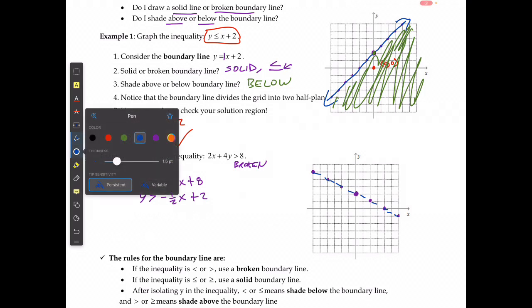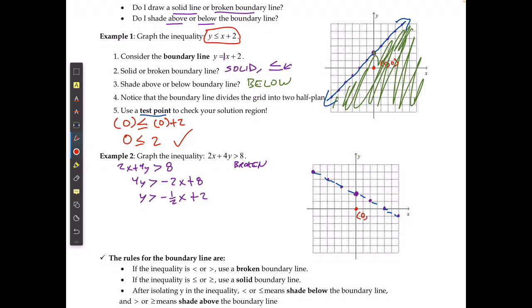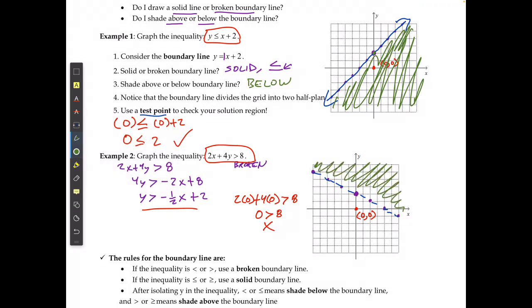I check the test point (0, 0) using the original inequality — not the modified one — because if I made a mistake like forgetting to flip a sign, the original protects me. Substituting: 2(0) + 4(0) > 8 gives 0 > 8, which is false. Since (0,0) is not part of the solution region, the solution region is on the other side — above the line.